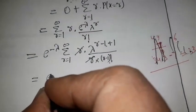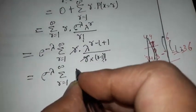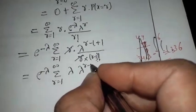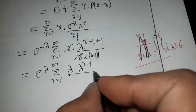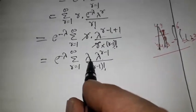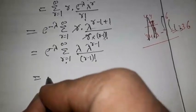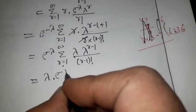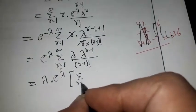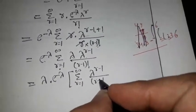This term can be written as e to the power minus lambda, summation r from 1 to infinity, lambda to the power 1 equals lambda into lambda to the power r minus 1, upon factorial(r−1). Now lambda is also a constant and does not depend on the summation, so it becomes lambda into e to the power minus lambda, times summation r from 1 to infinity of lambda to the power r minus 1 upon factorial(r−1).